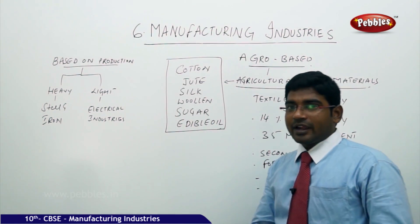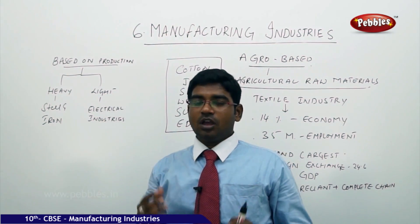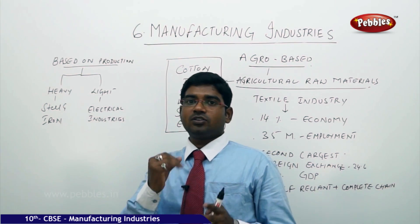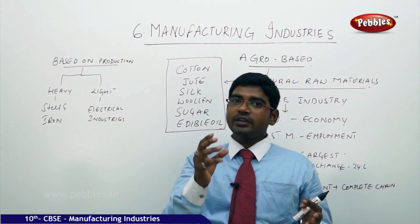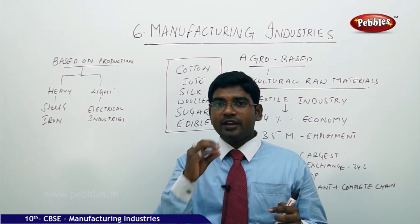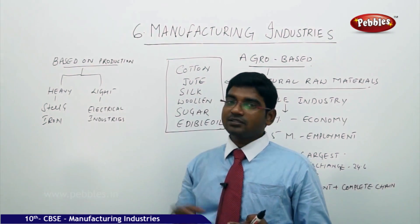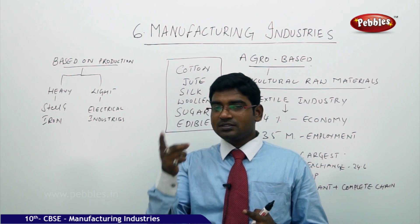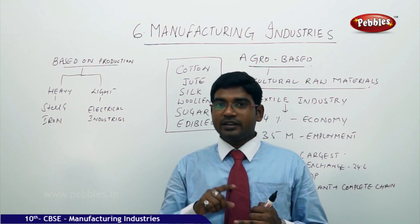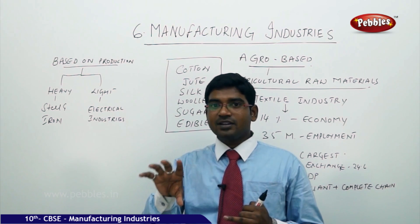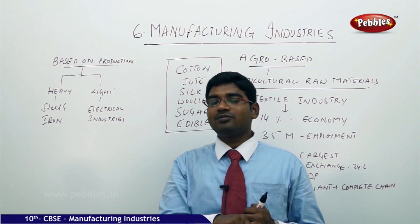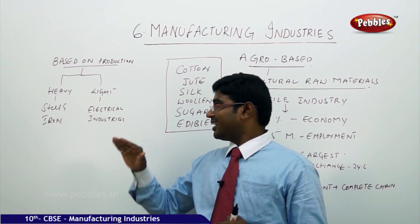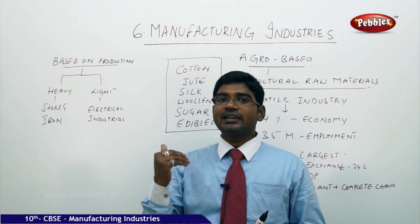Let us try to understand the category of production-based industries — how much production comes from the industry. If the product coming out from a particular industry is very strong in nature, it is called heavy industry. For example, iron industry is a heavy industry. It falls under the mineral-based raw material category and also serves as a base for other industries as their raw material, placing it under heavy industries.